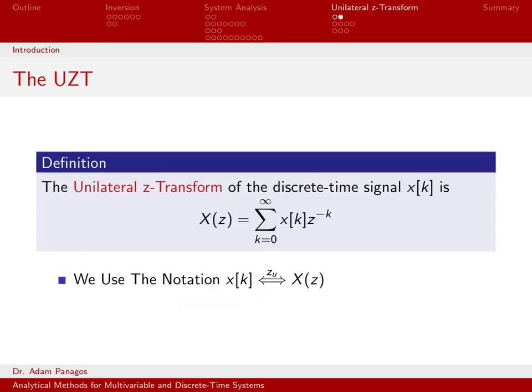So now we know kind of the motivation for why we would want to use the unilateral Z-transform. Let's go ahead and state the definition, and here it is in the box. The unilateral Z-transform of some discrete time signal x of k is defined as follows. We still call it x of z, and it's equal to the sum from 0 to infinity of x of k, z to the negative k.